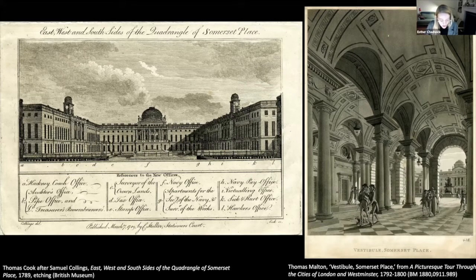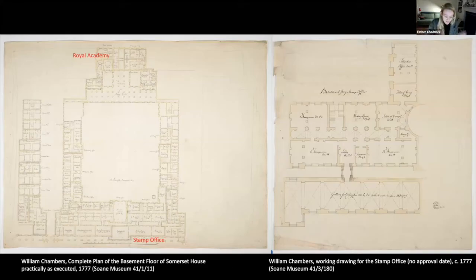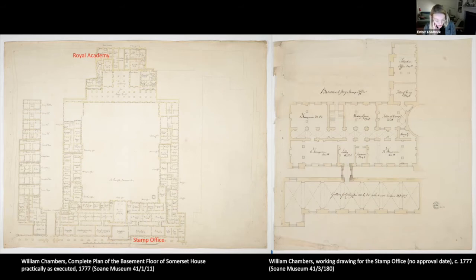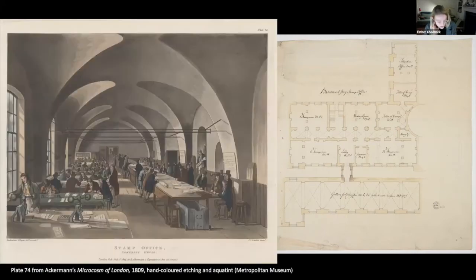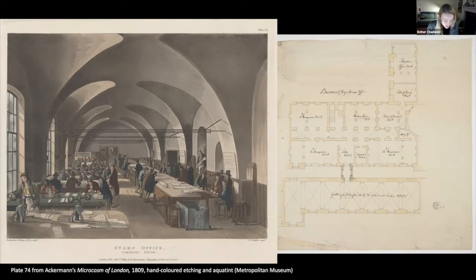Here are William Chambers' plans showing on the left the layout of the whole complex and on the right a detail of the stamp office showing stamping rooms, a gallery for rolling presses, and other offices. This is an interior view of one of those rooms from a print of 1809, where we see rolls of paper being brought in, laid out in piles, examined, and hand-stamped with screw presses by the employees — the paper workers at these rows of benches.